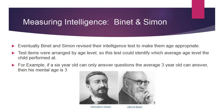Eventually, Binet and Simon revised their intelligence tests to make them age-appropriate. Test items were arranged by age level so the test could identify which average age level the child performed at. For example, if a six-year-old can only answer questions the average three-year-old can answer, then his mental age is three. Conversely, if a three-year-old can answer questions a six-year-old could answer, then their mental age is six.